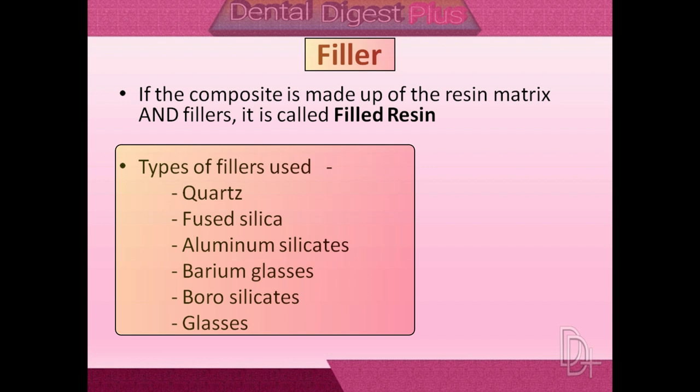Submicron silica particles of 0.04 micrometer size, referred to as micro-fillers, are obtained by a pyrolytic or precipitation process. Quartz has been used extensively as a reinforcing filler, particularly in the early versions of dental composites. It has the advantage of being chemically inert and yet very hard, making it abrasive as well as difficult to grind into very fine particles. Types of fillers used include quartz, fused silica, aluminum silicates, barium glasses, borosilicates, and other glasses.